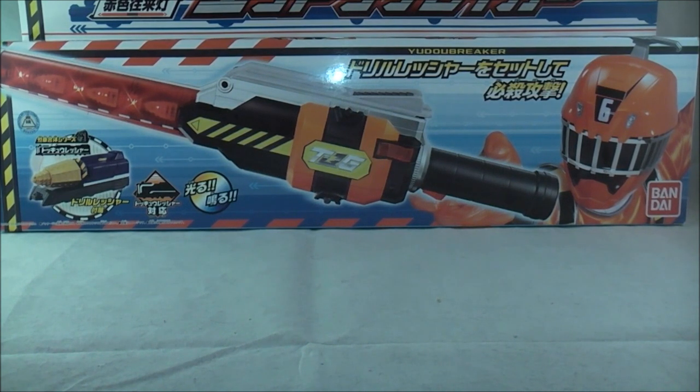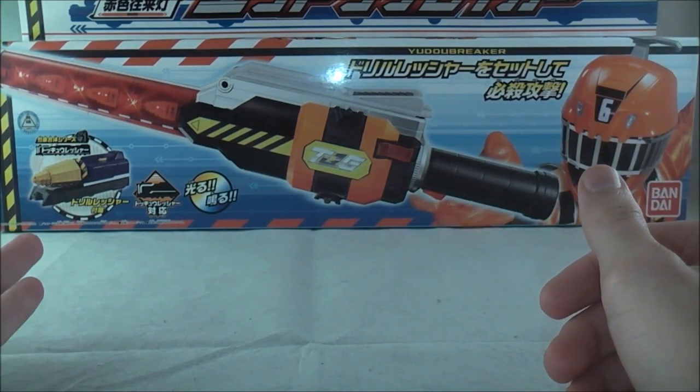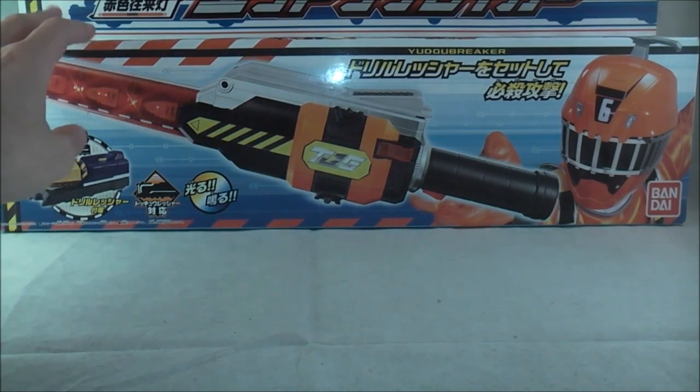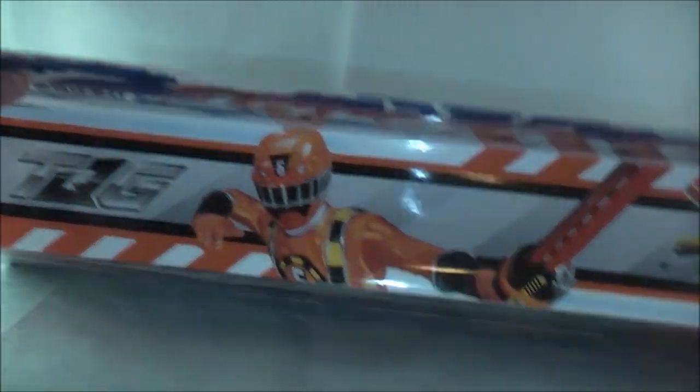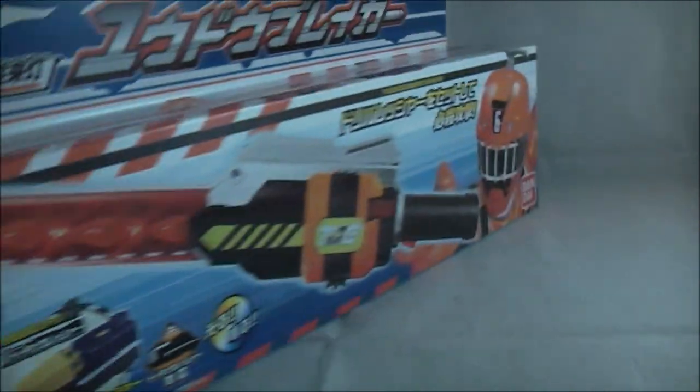As usual, it's pretty basic but pretty neat packaging. You got a picture here of Rokugo holding the weapon. On the other end here, it shows that it comes with the Drill Resha. On the top, you kind of just got a generic action shot of him. Same thing on the side, just some generic action shots.